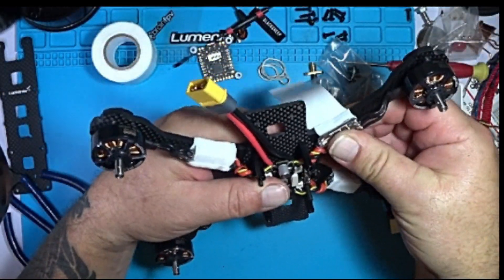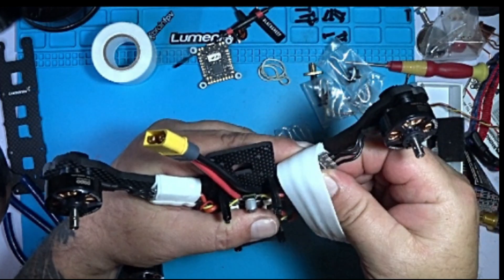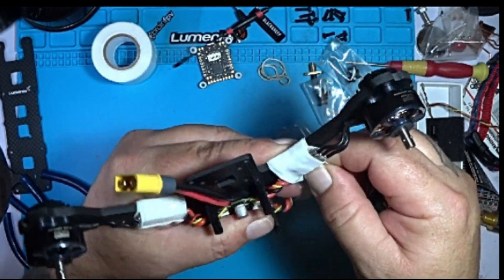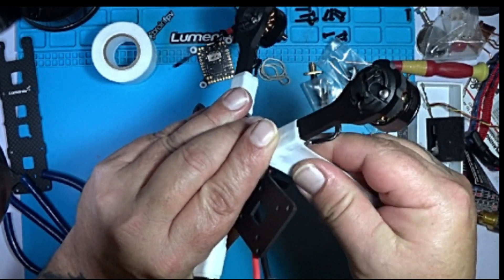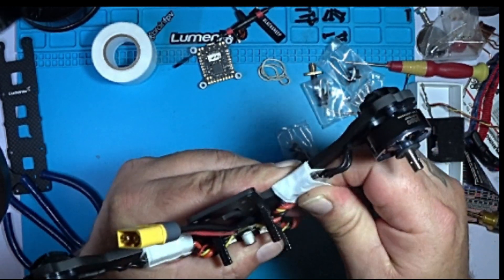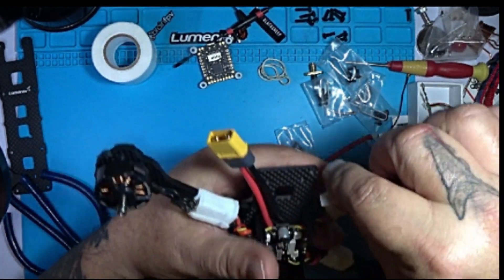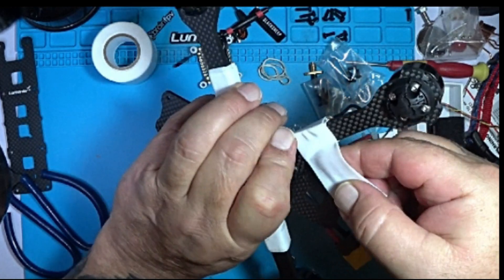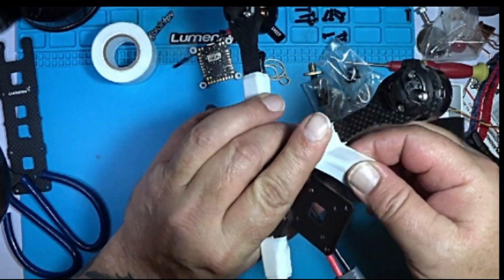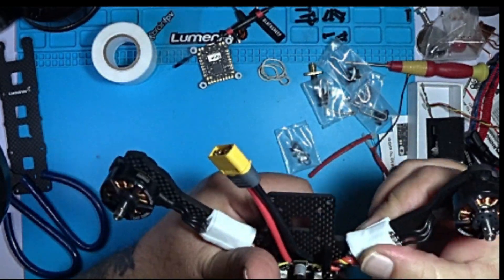Then wrap the ESC itself. You can stretch this out pretty good and get a real good grip on the ESC. I always make sure I cut it long enough to go over the top of the ESC twice.